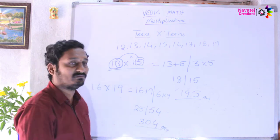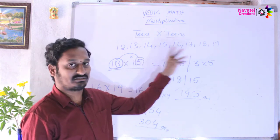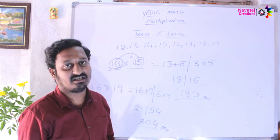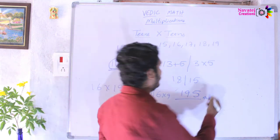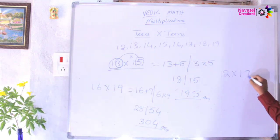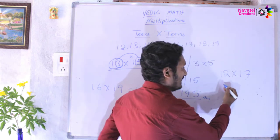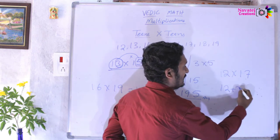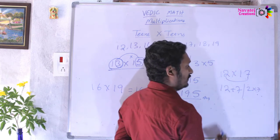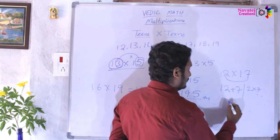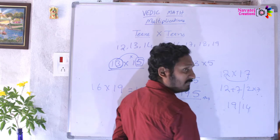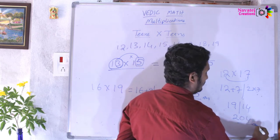Now, any two numbers from 12 to 19 — this is simple and fast multiplication. For example, 12 into 17: take 12, add the ones-place digit 7, giving 12 plus 7 equals 19 as the first part. Multiply ones digits: 2 into 7 is 14 as the second part. Apply the balancing method — the answer is 204.